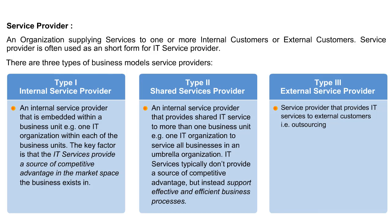Type 2 is an Internal Service Provider that provides shared IT services to more than one business unit — for example, one IT organisation to service all businesses in an umbrella organisation. IT services typically don't provide a source of competitive advantage, but instead support effective and efficient business processes. Type 3 is External Service Provider, which provides IT services to external customers, that is, outsourcing.